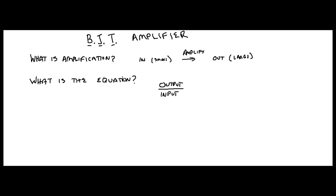For the bipolar junction transistor, beta is your amplifier. Your input going in through the base — I_B — gets multiplied by beta to give you I_C, which is your output. Rearranged: beta equals I_C over I_B. You can think of beta as the current amplification of your transistor.